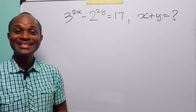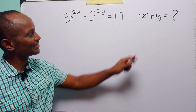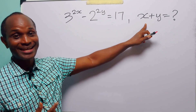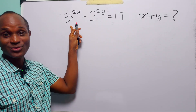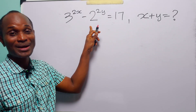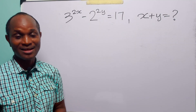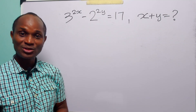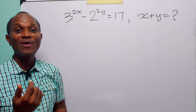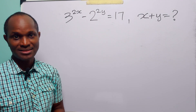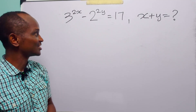Hello and happy new year. In this math tutorial our task is to find the value of x plus y, given that 3 to the power 2x minus 2 to the power 2y is equal to 17. We have been told that x and y are natural numbers — counting numbers, positive integers.